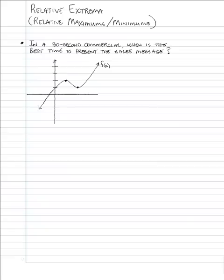You can see in this little graph there's a hill and a valley, a peak and a valley — a high spot and a low spot. The position we see right here we call a relative maximum point. It's not just a relative maximum, but it's a relative maximum point.